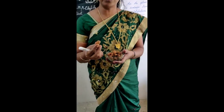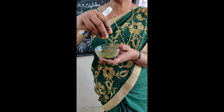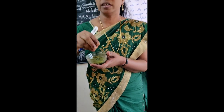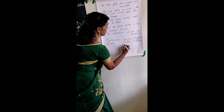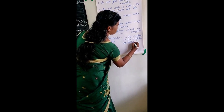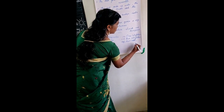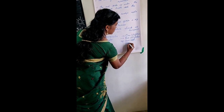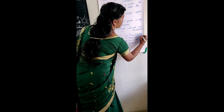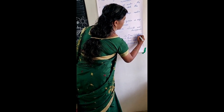Bean seed is a dicot. Groundnut is also a dicot. Green gram — have you seen green gram? It looks green. It is also a dicot. So examples for dicots are bean seed and groundnut. The example for monocot is rice.